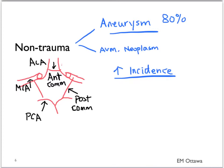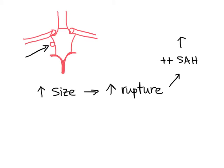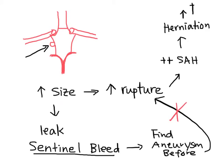The incidence of aneurysms increases with a family history of aneurysms. Diseases associated with increased incidence include polycystic kidney disease and connective tissue diseases such as Marfan's and Ehlers-Danlos syndrome. As the aneurysm grows, the risk of rupture increases. A ruptured aneurysm causes significant blood loss into the subarachnoid space, pushing on the brain and leading to herniation and death. In some aneurysms, there are small or minor leaks prior to rupture, called a sentinel bleed. Investigating a sentinel bleed might lead to earlier discovery of an aneurysm before it fully ruptures, and that is what we wish to pick up in the emergency department.